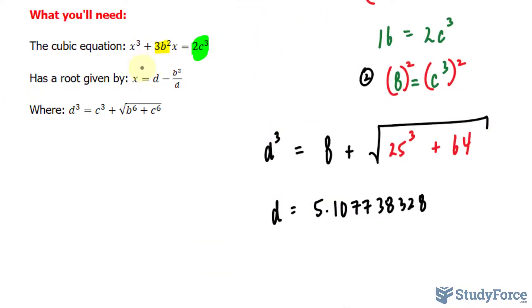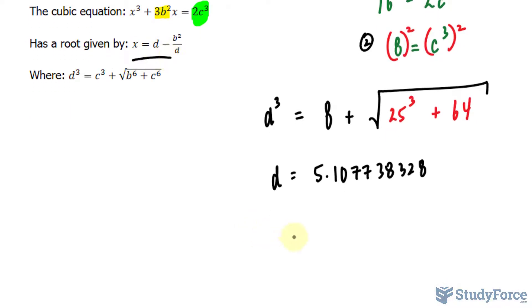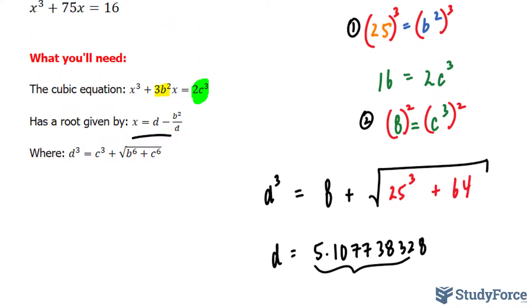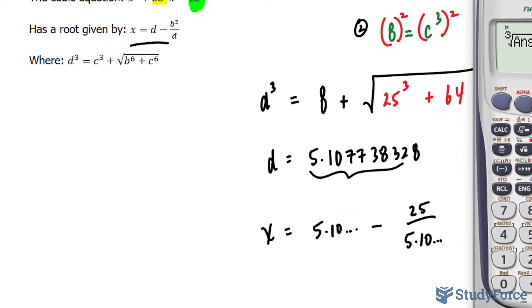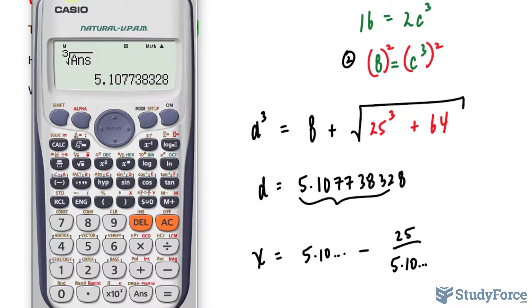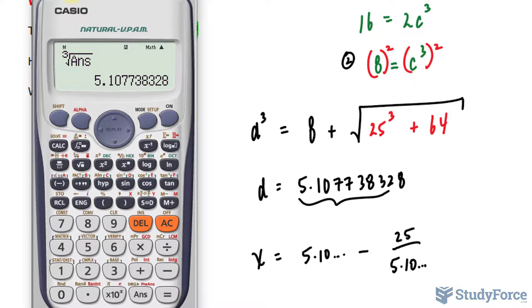I have everything that I need to find out my root, and I will use that formula, where x equals this value minus what we found for b², and that was originally 25, 25 over 5.10. Now, it's important that when you do this calculation, make sure that you include all those numbers after the decimal place, or at least 4, to get an accurate output.